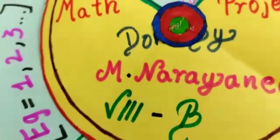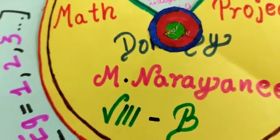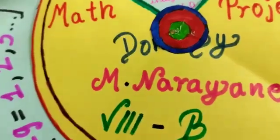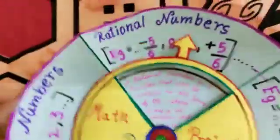This is called the donut method wheel for rational numbers. This is the method I did today.